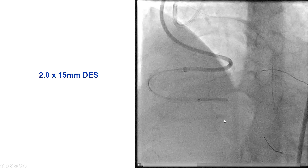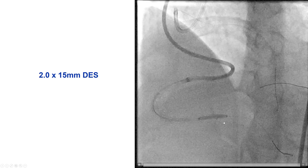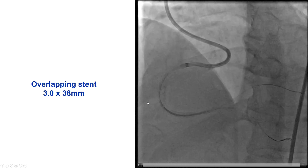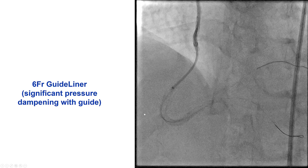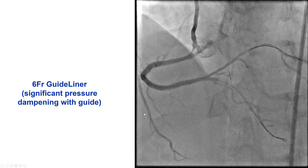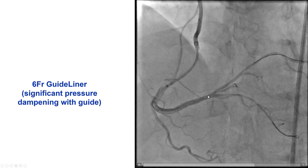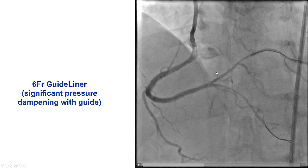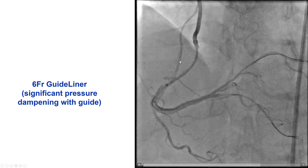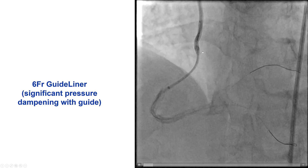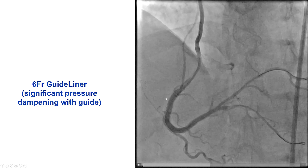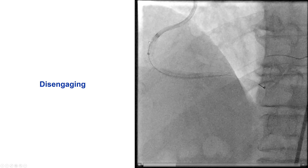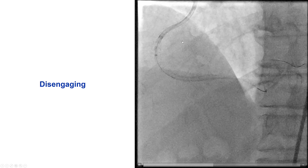We placed a stent immediately proximal to the bifurcation of the PDA and posterolateral, and then overlapped it more proximally with a 3.0 by 38 millimeter drug-eluting stent. That provided a nice result. We still had some diffuse disease into the PDA, and there was some pressure dampening, which is why we used a guide extension inserted into the RCA and disengaged the guide catheter.